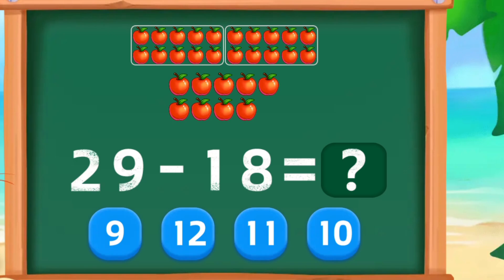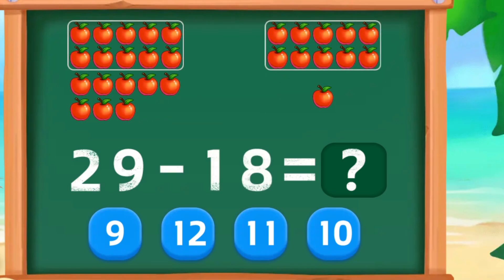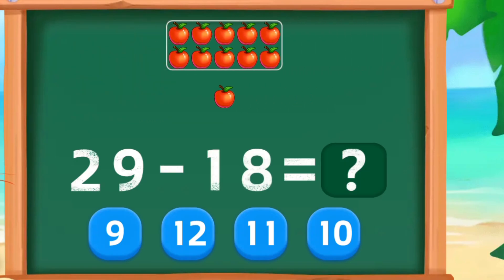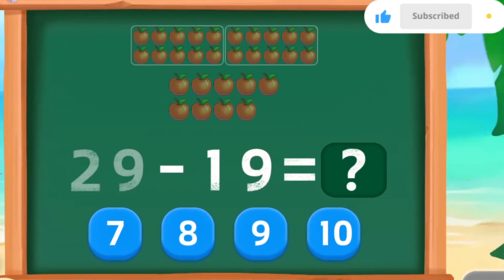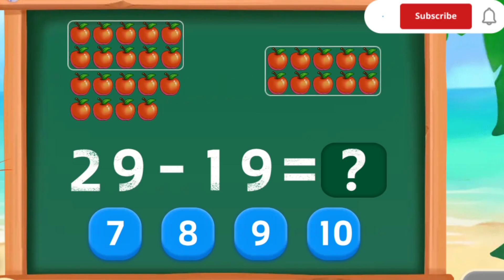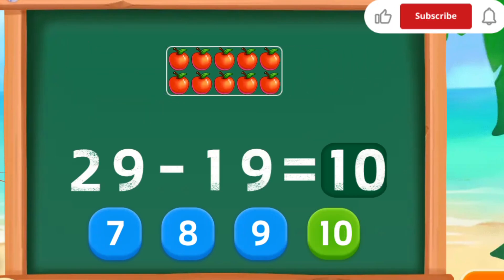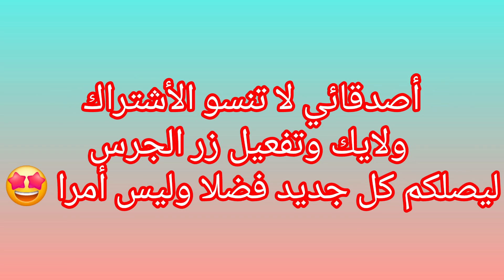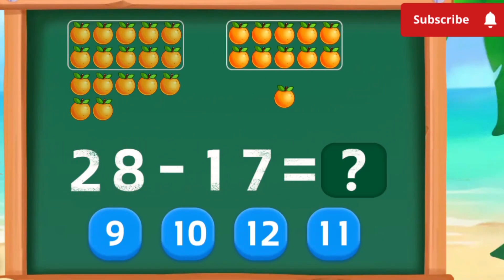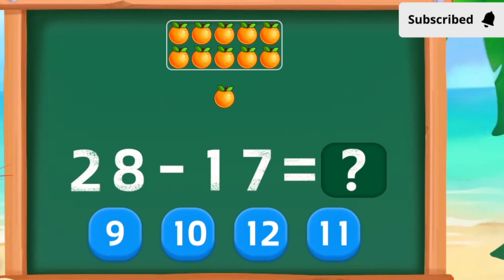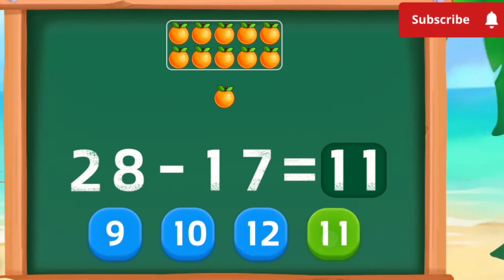29 minus 18 is 11. Wonderful. Excellent. Excellent. 28 minus 17 is 11. Excellent.